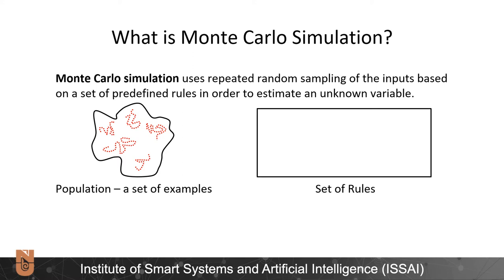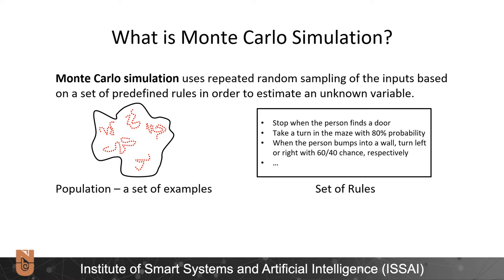And there is a set of rules, which included for us: stopping the game when you find a door, taking a turn in the maze with, for example, 80% probability, and turning left or right with a 60-40 chance after bumping into a wall, and so on. Using this list of rules, we start simulating your behavior in the maze in order to calculate the unknown variable — the probability of finding an exit — and hope that in the end it will be a good estimator of the true value from the actual population.